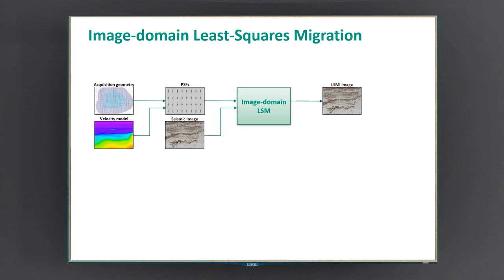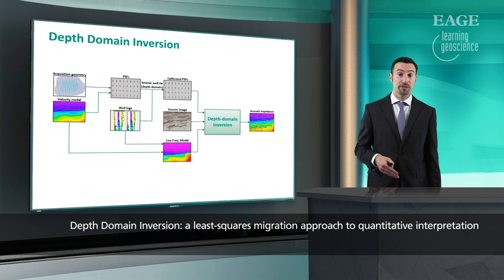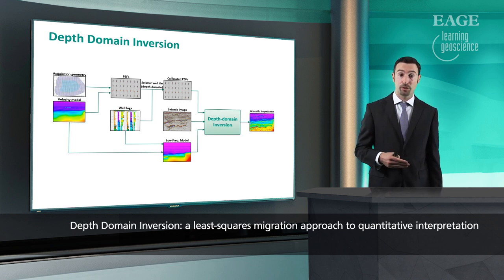They replace the 1D time and space invariant deterministic operator that is conventionally used in time domain AVO inversion. This is how the workflow for image domain least-squares migration looks like. Point-spread functions are a function of the acquisition geometry, which is known, and of the velocity model that was estimated for imaging. The image domain least-squares migration workflow finds a reflectivity model that minimizes, in a least-squares sense, the difference between the seismic image and the convolution of the point-spread functions with such reflectivity model, returning a least-squares migrated image. As, in some places, the reflectivity model is known — where we have wells — point-spread functions can be calibrated to the well reflectivity to invert directly for acoustic or elastic properties.